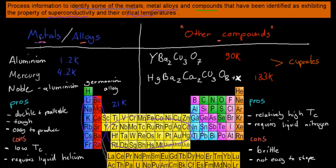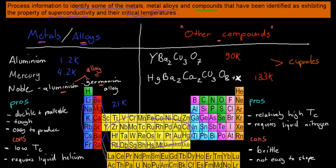An alloy is a combination of two or more metals. For example, a niobium-aluminium-germanium alloy — germanium is actually a semi-metal, so superconductors can include both metals and semi-metals. This alloy is an example because it has more than two different types of metals. Aluminium and mercury are your straightforward metal examples.